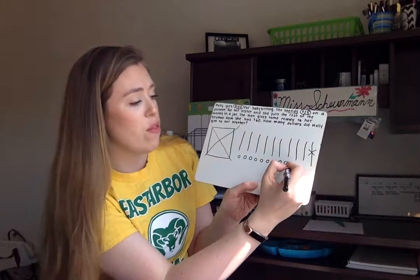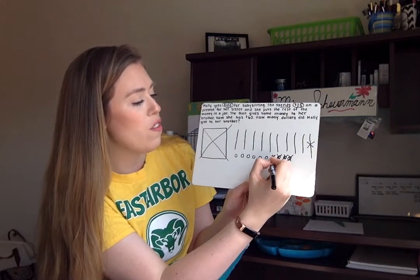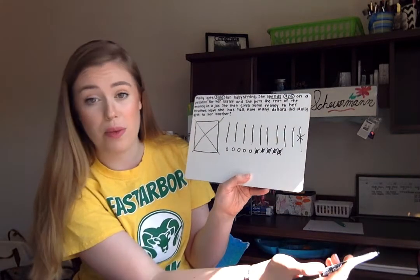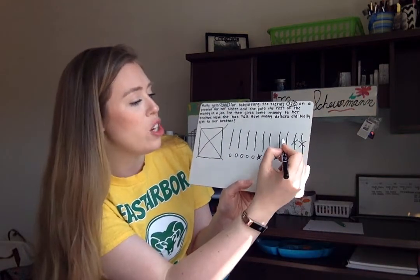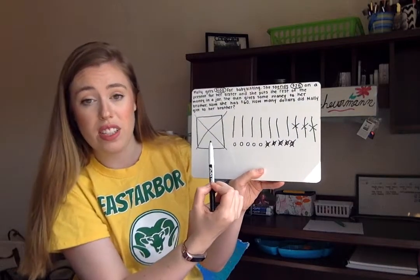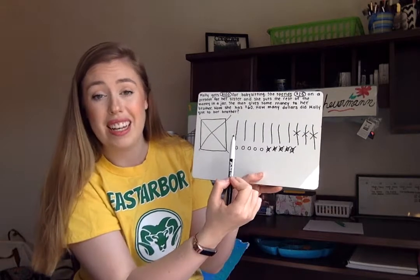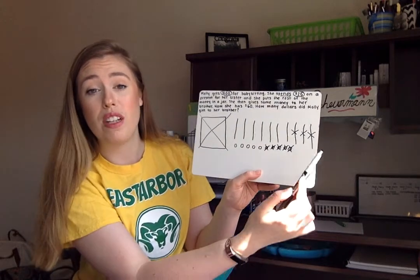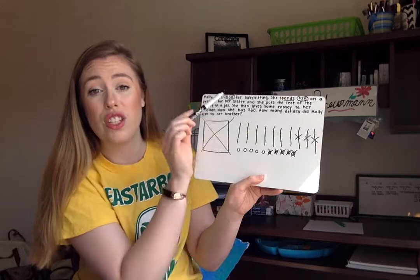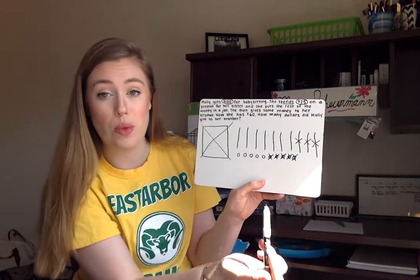25 has five ones, so we need to subtract five of them: 1, 2, 3, 4, 5. And 25 has two groups of 10, so we need to cross out two groups of 10. So we started with $100, had to trade in a group of 100 for 10 groups of 10, then cross out one group of 10 for 10 ones to subtract the 25. This is showing 100 minus 25.